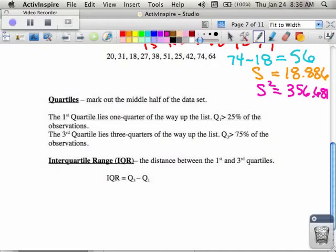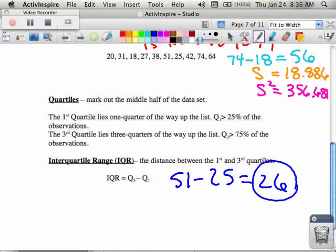From our observation up above, if we were looking at Q1 minus Q3, we would have had 51 minus 25, or in other words, 26. That would be our interquartile range. It's Q3 minus Q1.